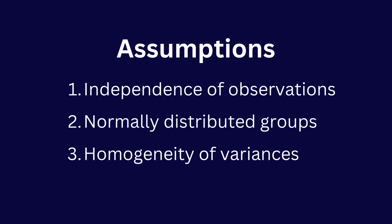Let's see what are the assumptions for the one-way ANOVA test. The first assumption is independence of observations. This is a critical assumption in statistical analysis like one-way ANOVA, meaning that each observation in your data set should be independent of the others. In other words, the value of one observation should not influence or predict the value of another observation.